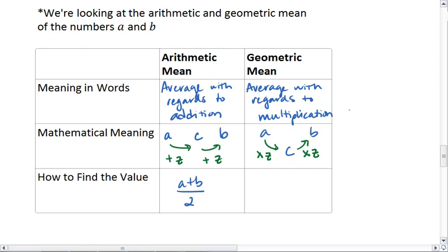For example, if I have 2 and, let's say, 18. The geometric mean is 6. That's because 2 times 3 brings me to 6. 6 times 3 brings me to 18. So 6 is the geometric mean.